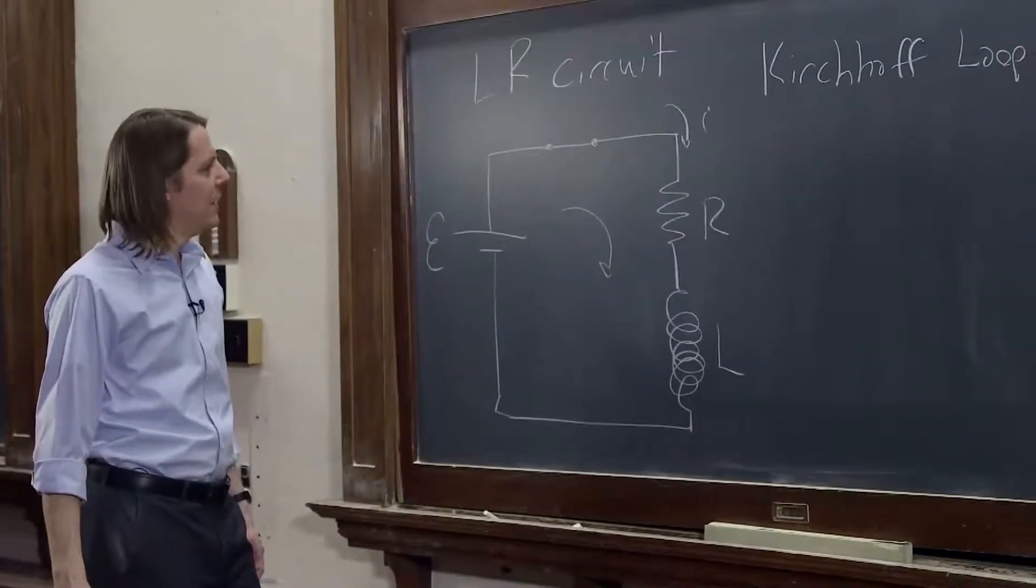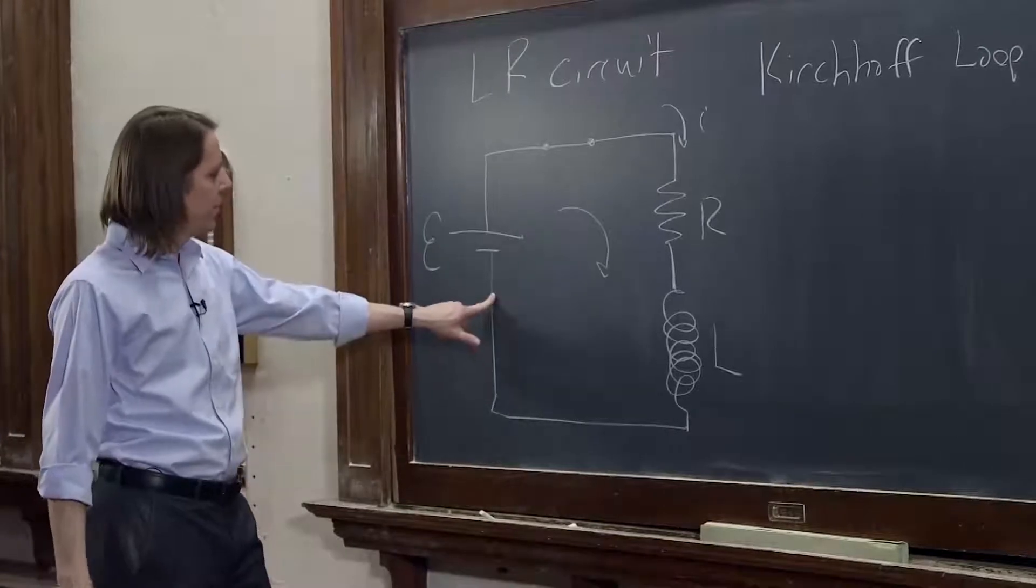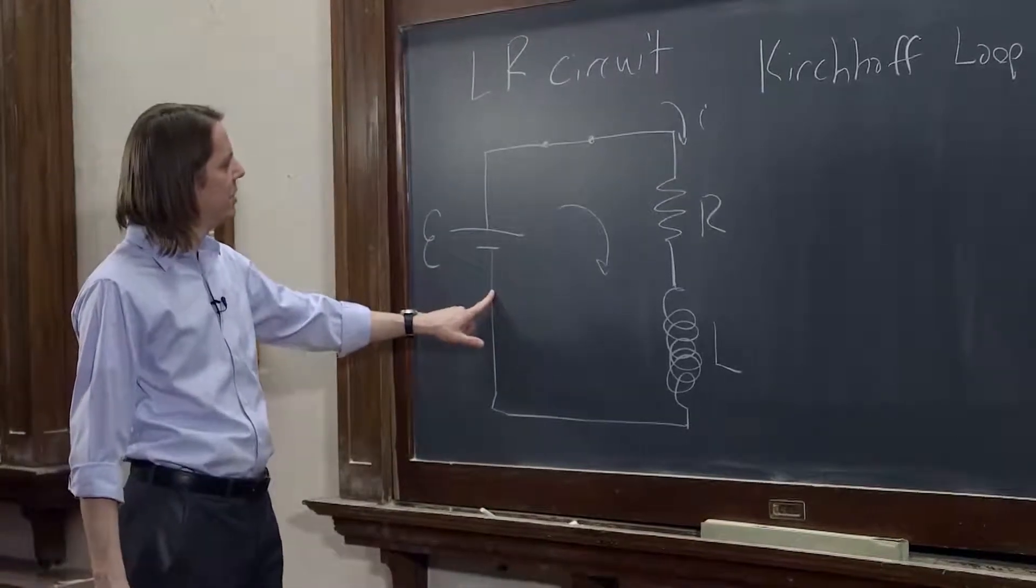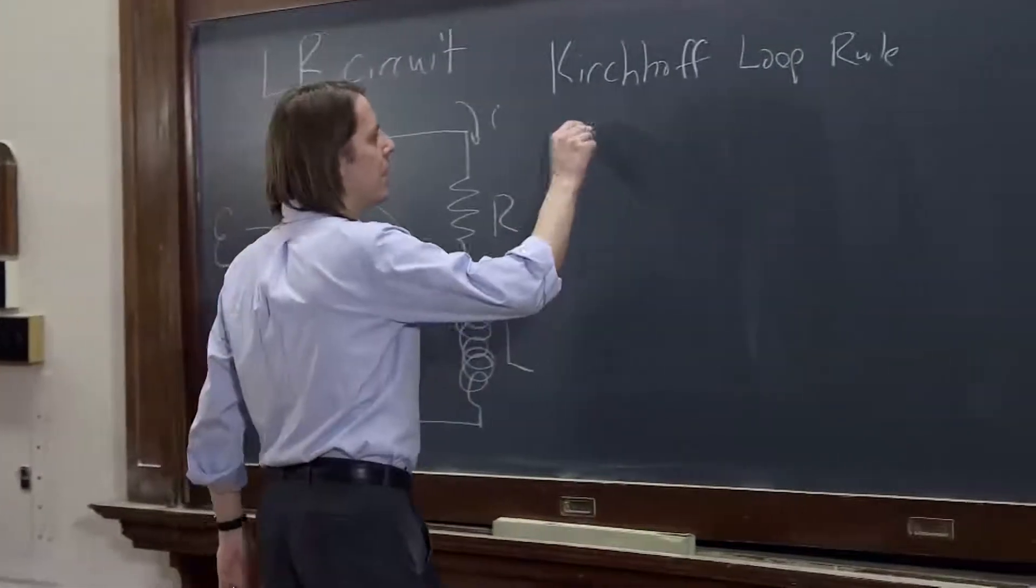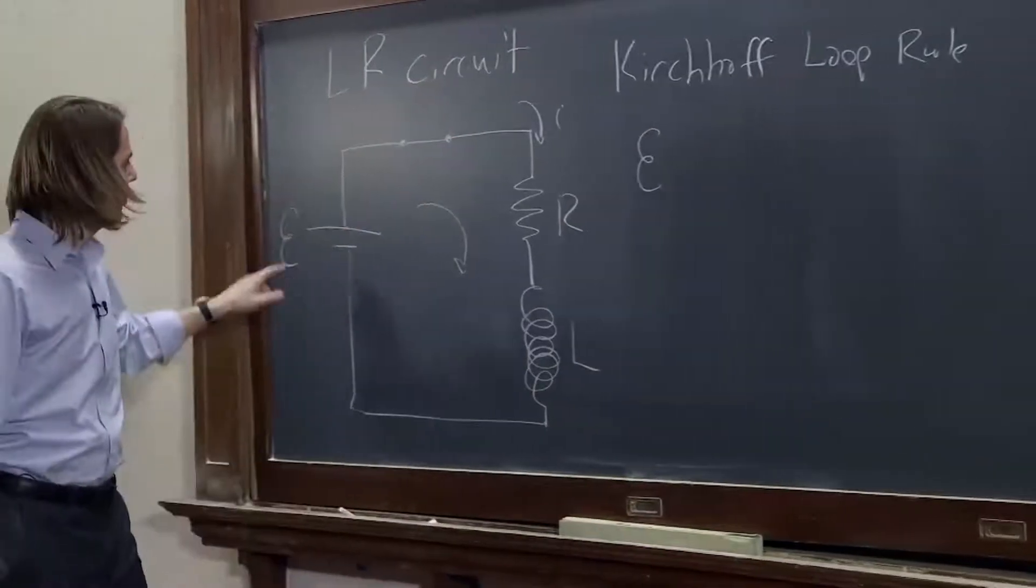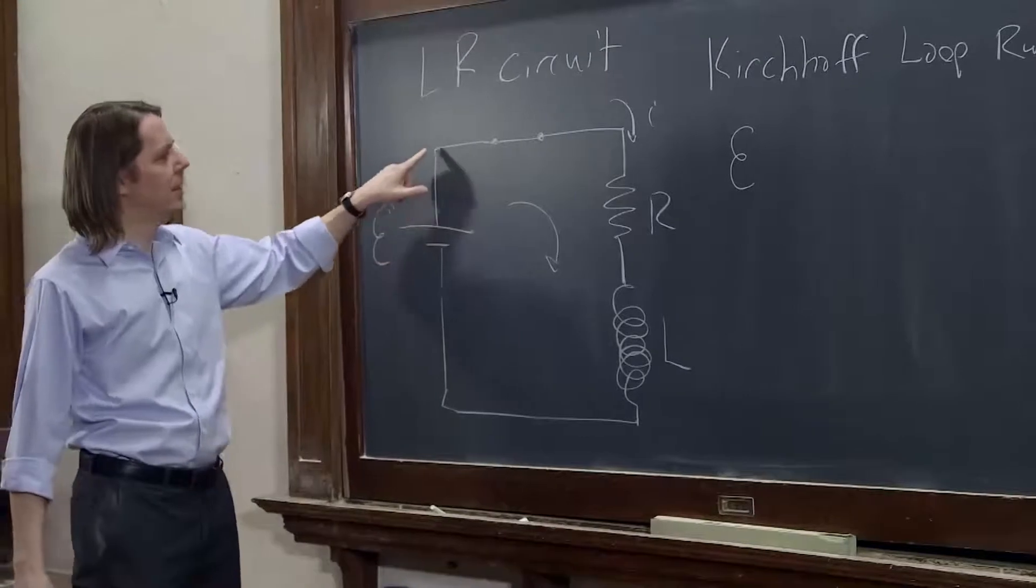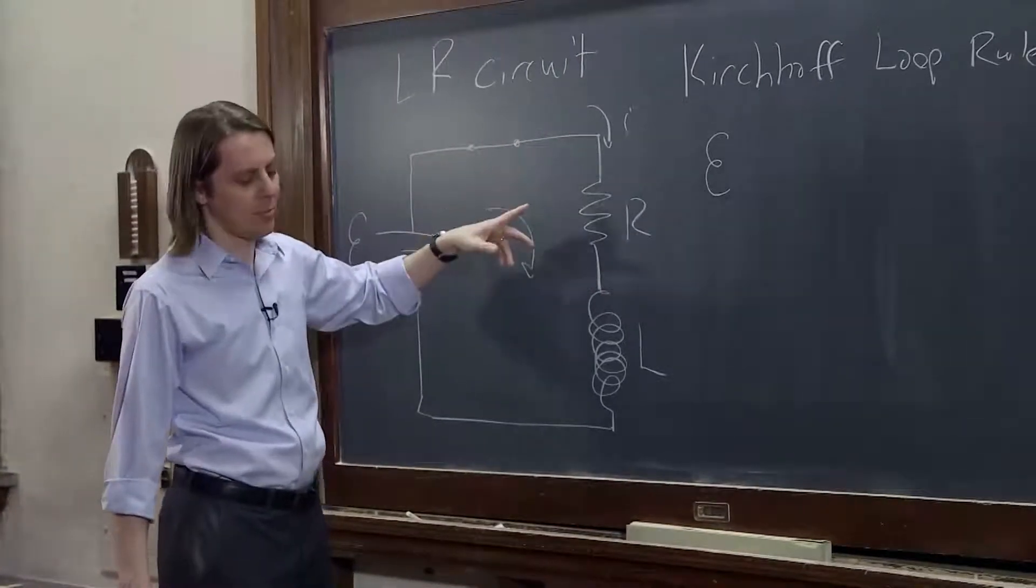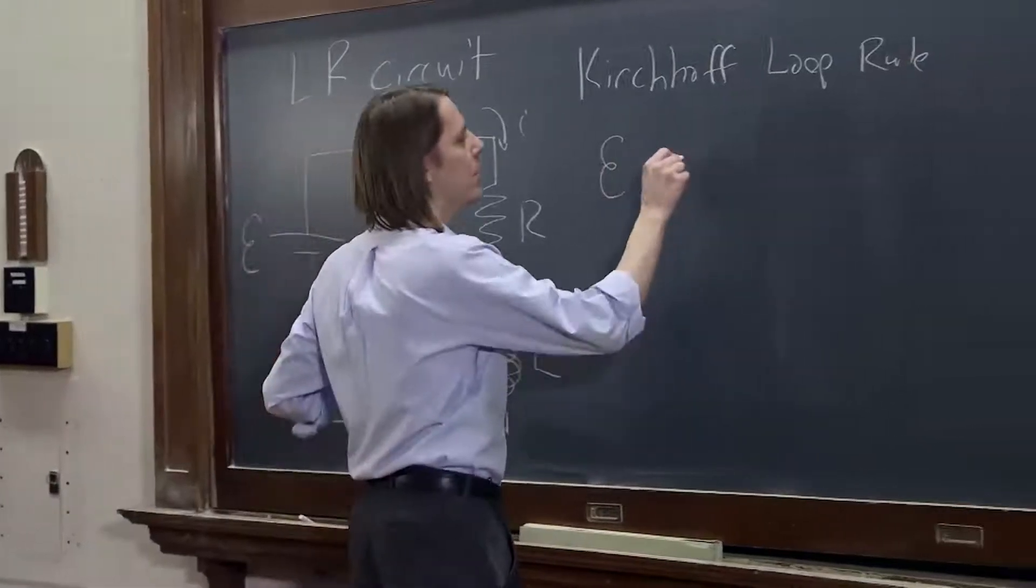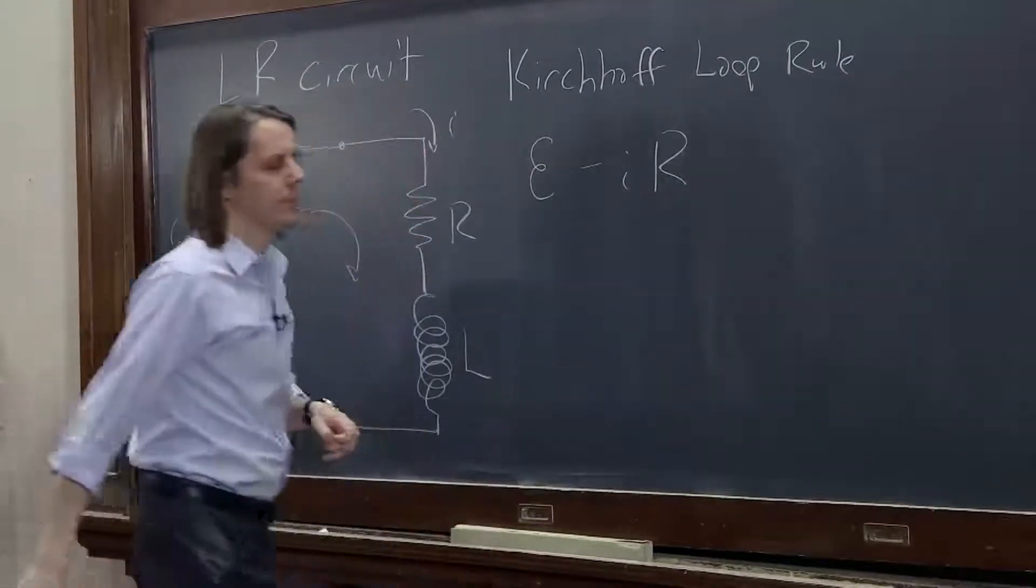So you can say, I'm going to start here. And if I'm going to test charge moving across this battery, that's going to be plus E EMF, because I'm going from the low plate, low potential to high potential. And I move around. I'm moving with the current across a resistor. That's a potential drop. So it's minus IR.